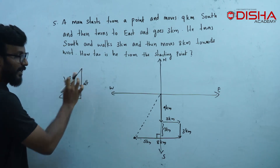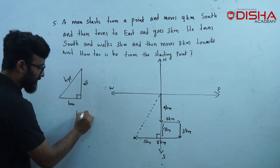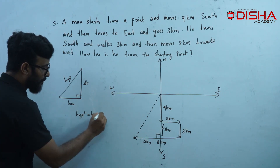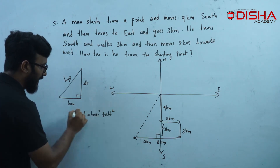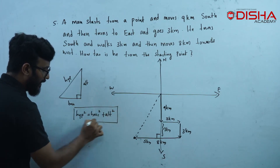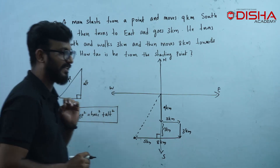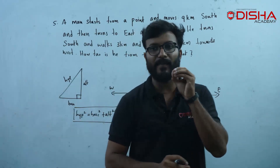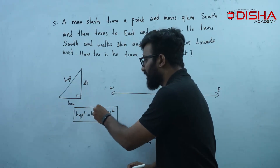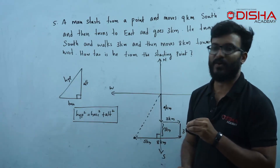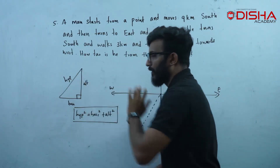We have three sides of the formula. Hypotenuse squared is equal to base squared plus altitude squared. This formula applies to the right-angle triangle. It is the right-angle triangle.